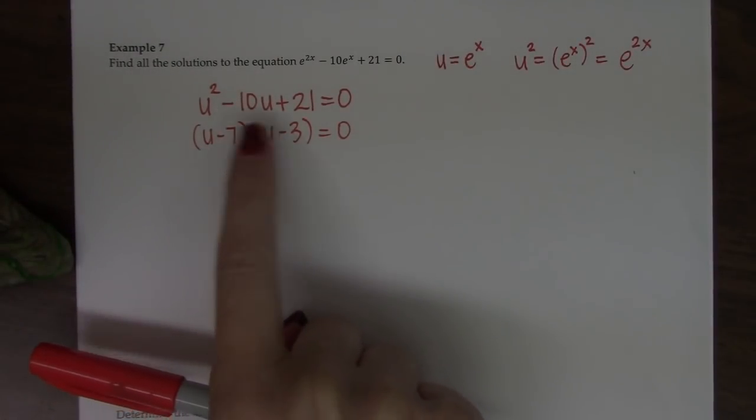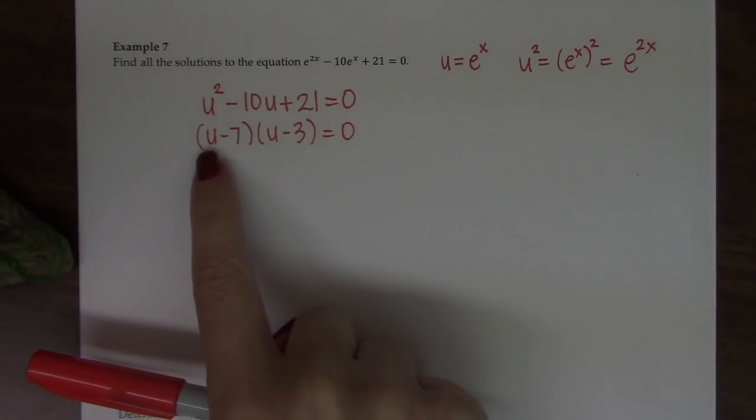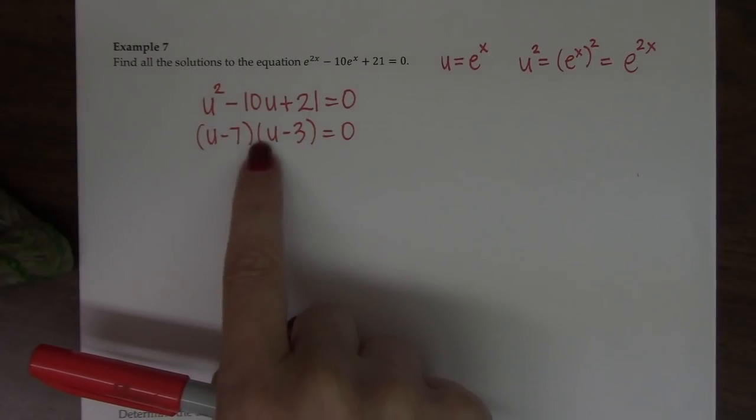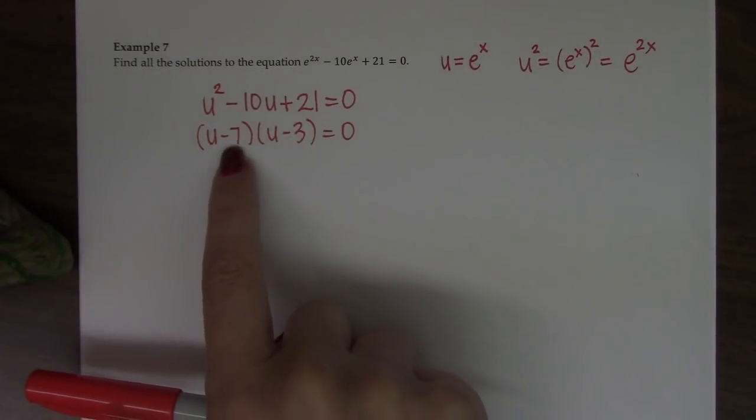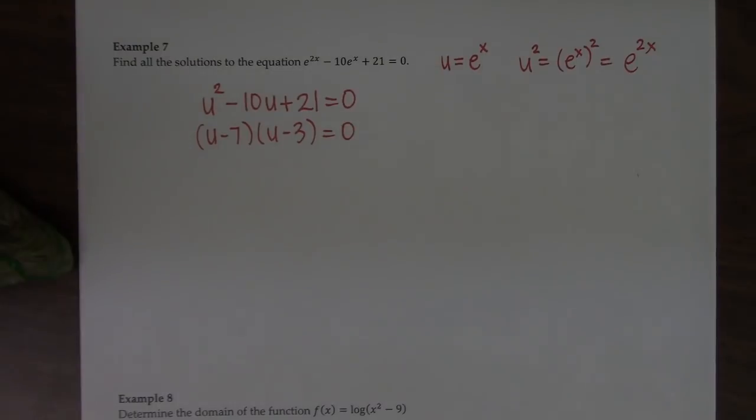Now I'm going to do a quick factor check. This is u squared. Negative 3 plus negative 7 is negative 10. And negative 7 times negative 3 is positive 21.